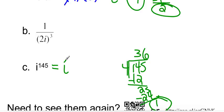Let's do this last one. So if we have 1 over (2i) cubed, that's the same thing as 1 over 2 cubed and i cubed. So that's going to be 1 over 8. And remember, i cubed is the one that you have to remember. i cubed is negative i.